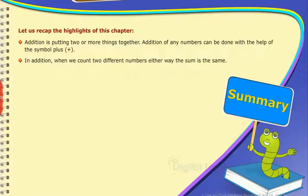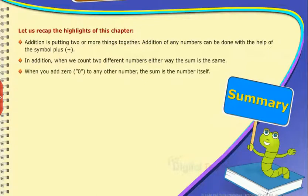In addition, when we count two different numbers, either way the sum is the same. When you add zero to any other number, the sum is the number itself.